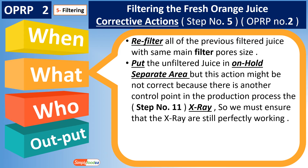Another option is to put the unfiltered juice in a separate on-hold area. However, this action might not be entirely correct, because there is another control point in the production process. When there is any finding in the line, we can place product in an on-hold separate area — but this must be considered in context of downstream controls.